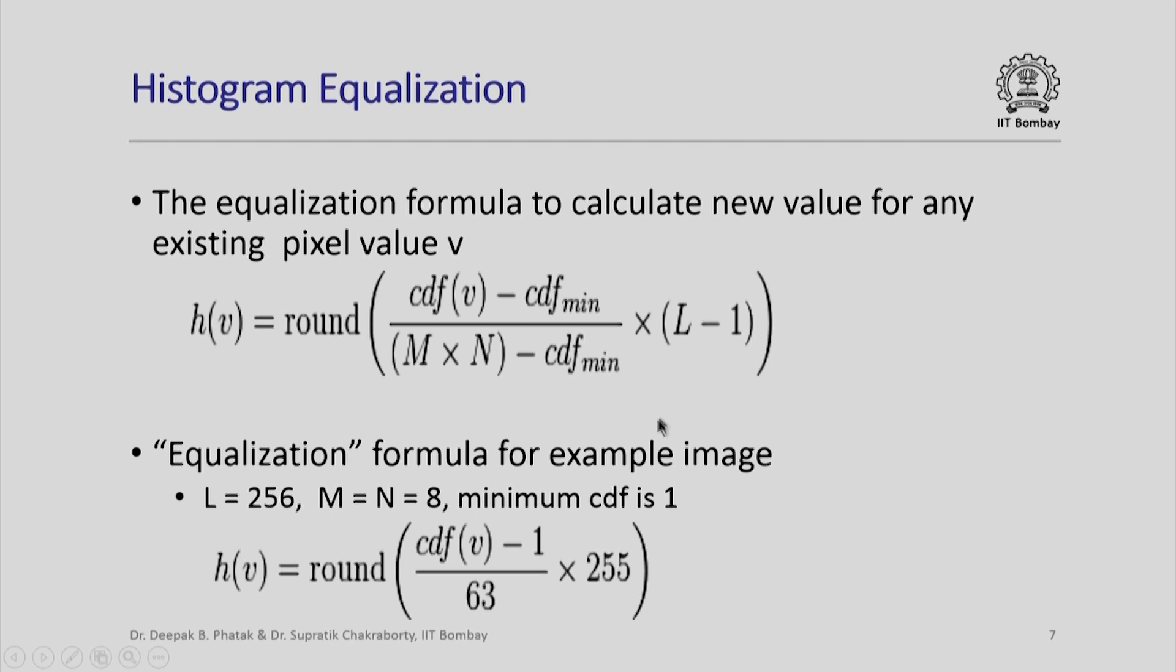The equalization formula for our example image where L is 256 and M and N are 8, with minimum CDF value of 1, reduces to this simple formula. Those interested in understanding how this formula came about are welcome to study more details available in open source material and other books on image processing. People who have worked out these details now permit us to implement this algorithm to easily build our program which will perform the necessary image enhancement.